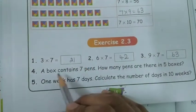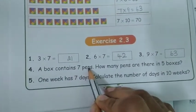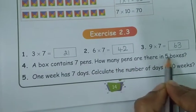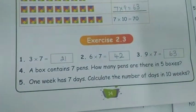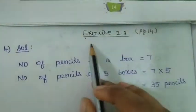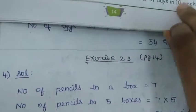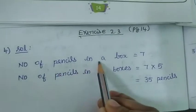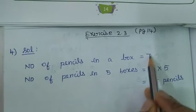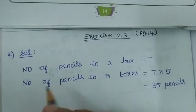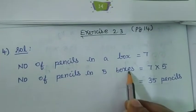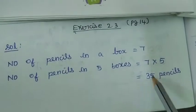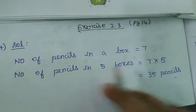Next, question 4: a box contains 7 pens. One box envelope has 7 pens. How many pens are there in 5 boxes? Take the note and write exercise 2.3, page number 14, fourth question. Number of pencils in a box: 7 pencils given. Number of pencils in 5 boxes — 5 sevens are 35 pencils. This is the answer. Write in your note.